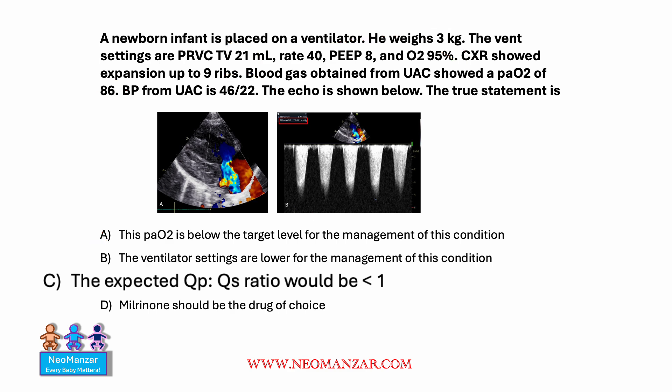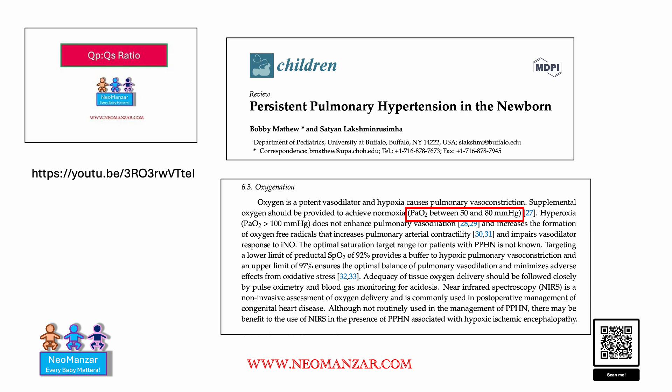Now let me show you the references. This is a very nice article — if you guys have time, just review it. The key inference here is that a PO2 of 50 to 80 should be acceptable in cases of PPH. By the way, this was a case of PPH, and I hope you guys identified the tricuspid regurgitation noted on the echo.